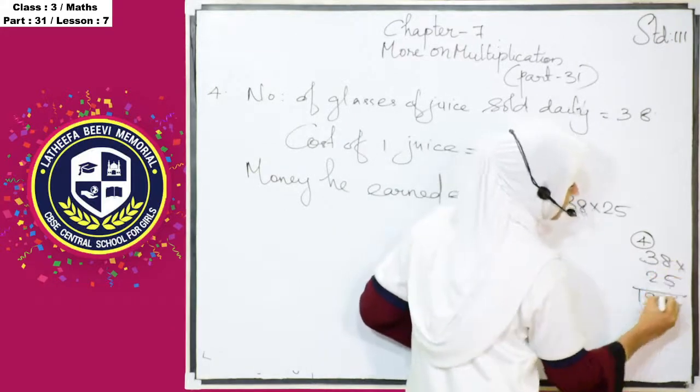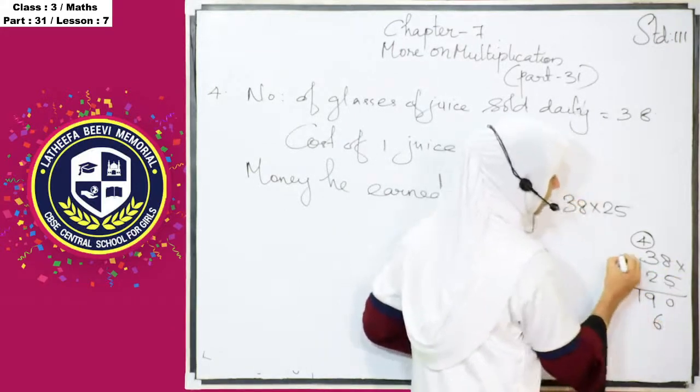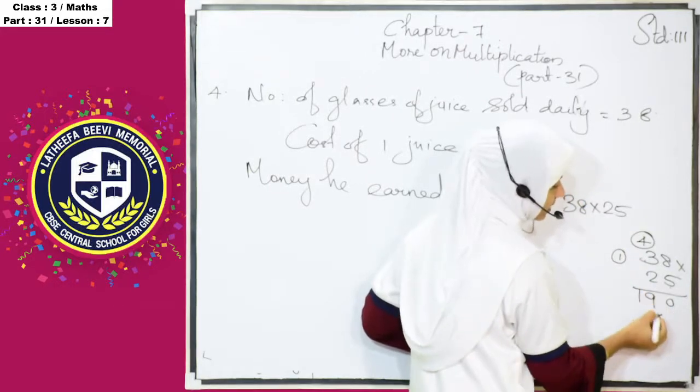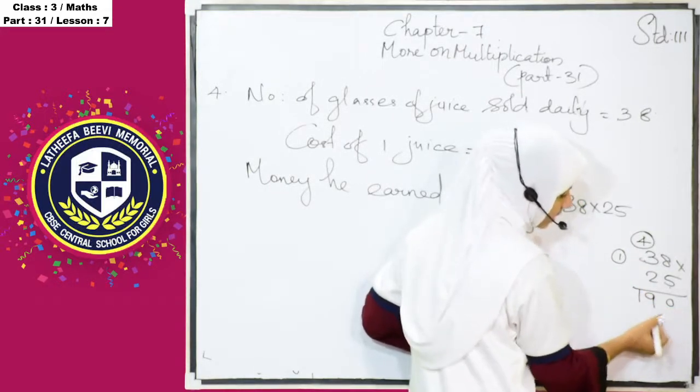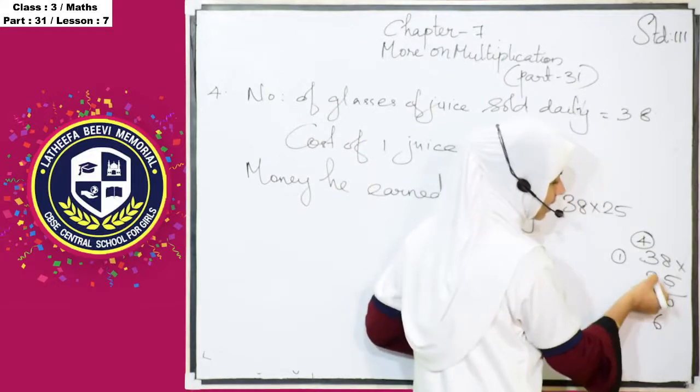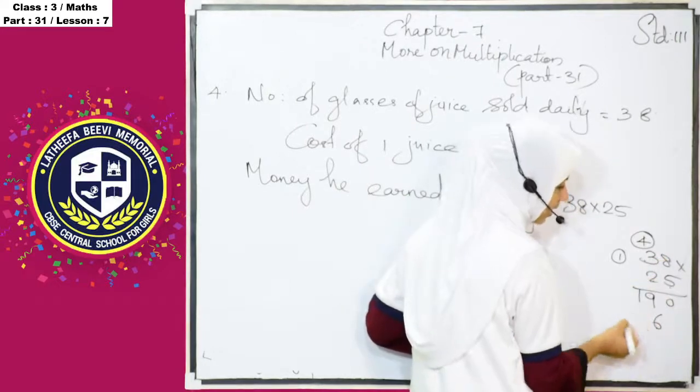And 2, 8's are 16, 6 here, 1 is carry over. 1's, 10's place is leave, 10's place is leave, next digit multiplication start here.